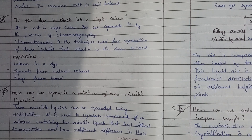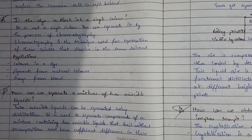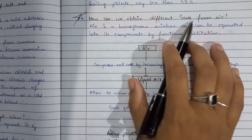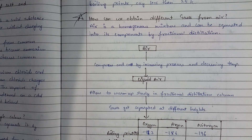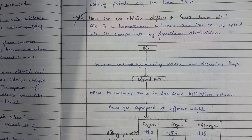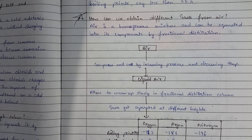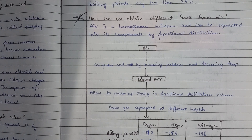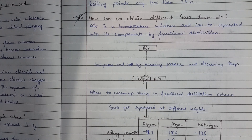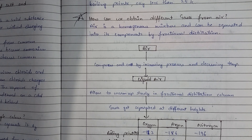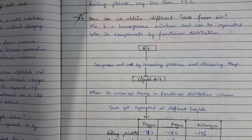In the distillation method, we use selective boiling — we boil the mixture at one temperature so that one component vaporizes and is then separated. How can we obtain different gases from air? Air is a homogeneous mixture and can be separated into its components by fractional distillation. In fractional distillation, we separate components according to their different boiling points.